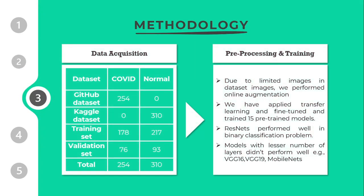Our proposed method is divided into different phases. First, there is data acquisition — we gathered data from different repositories including GitHub and Kaggle. GitHub repositories were used for COVID-19 images and Kaggle for normal images. The dataset was divided into training and validation sets in a 70-30 ratio. The main process is preprocessing and training: due to the limited number of images, we performed online augmentation during each epoch, applied transfer learning, fine-tuned our model, and trained 15 different models.